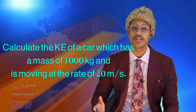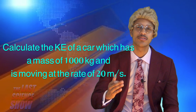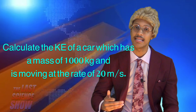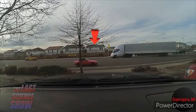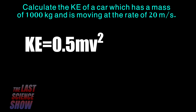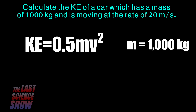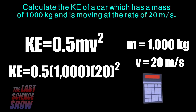Calculate the kinetic energy of a car which has a mass of 1,000 kilograms and is moving at the rate of 20 meters per second. Plug in the value of the mass — 1,000 kilograms — into the formula, and plug in the velocity. Remember to take half of the mass multiplied by the square of the velocity. Once you do that, you'll arrive at the correct answer.